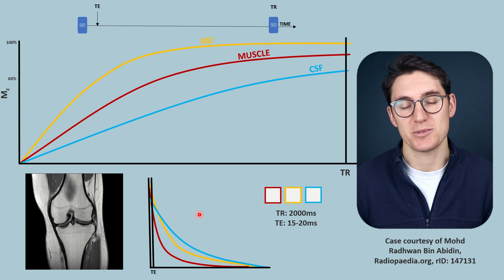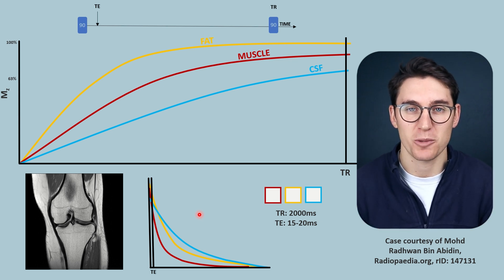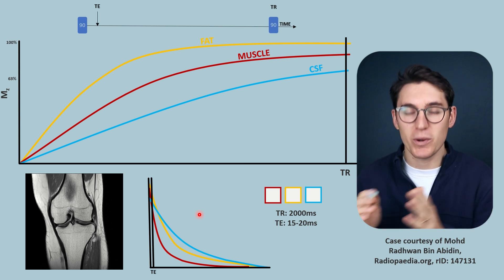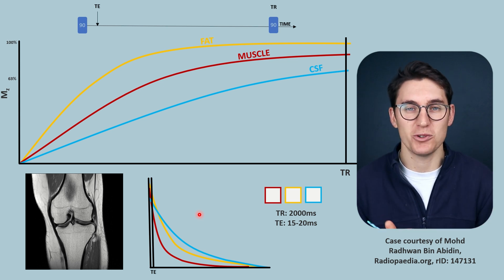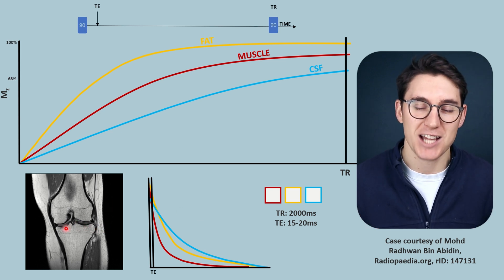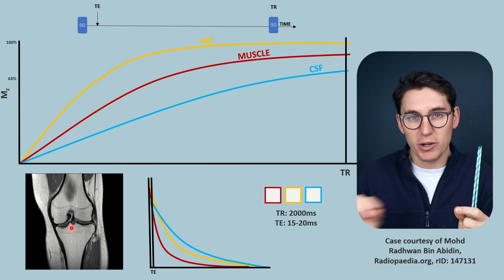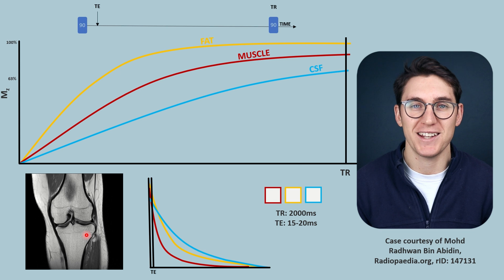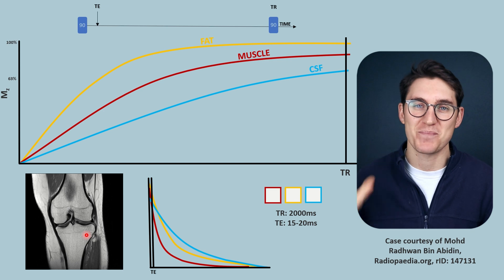If you want to practice these types of questions, there will be a question bank linked in the description once the course is complete — a great place to identify knowledge gaps. We're now going to shift focus to localizing where signal is coming from within the image: how we select a specific slice in MRI and how we plot signal values based on the X and Y plane. Join me in the next talk on spatial localization in MRI images.